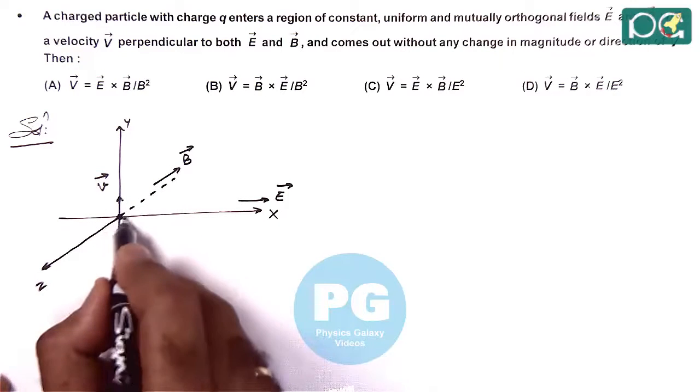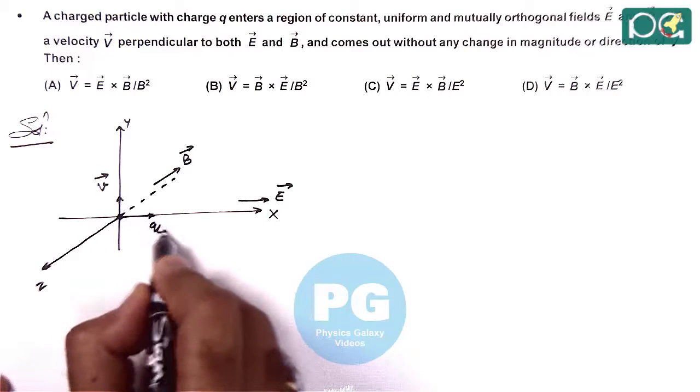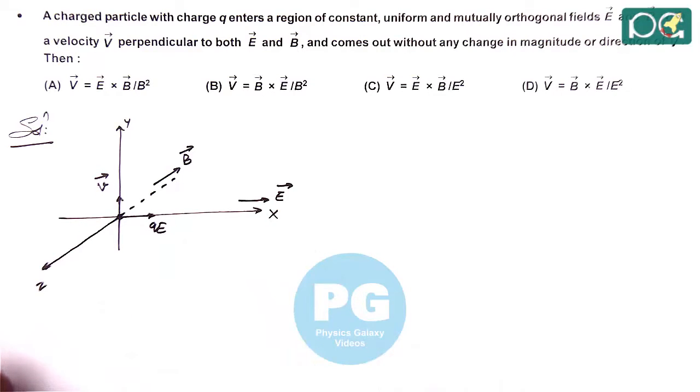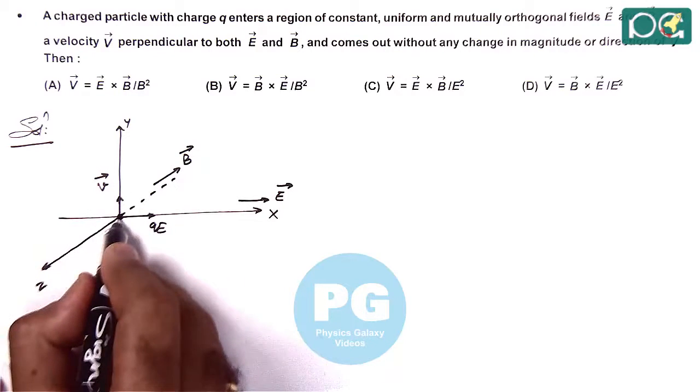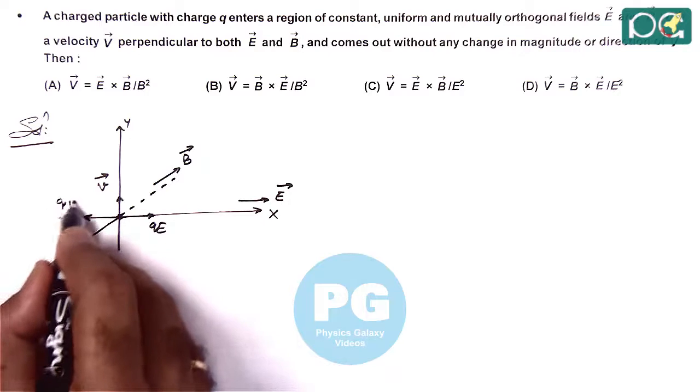Here the charge experiences a force QE toward the direction of electric field, and by right hand palm rule we can calculate the magnetic force on it is acting toward left which is QVB.